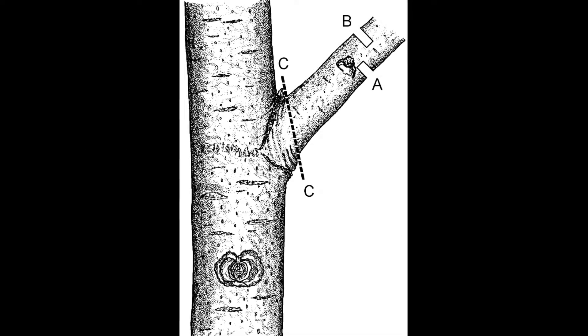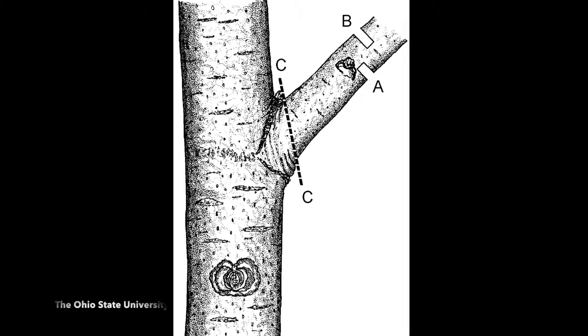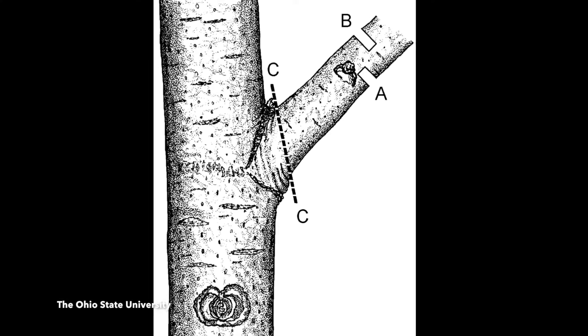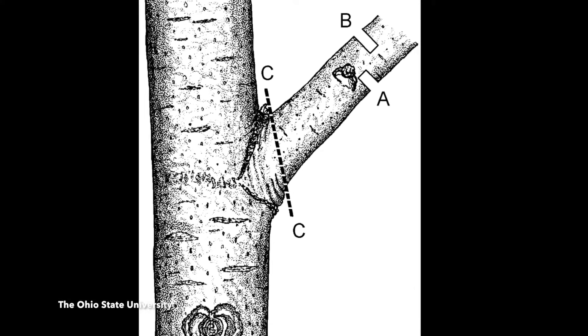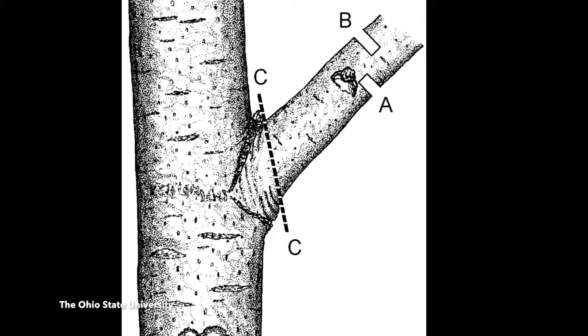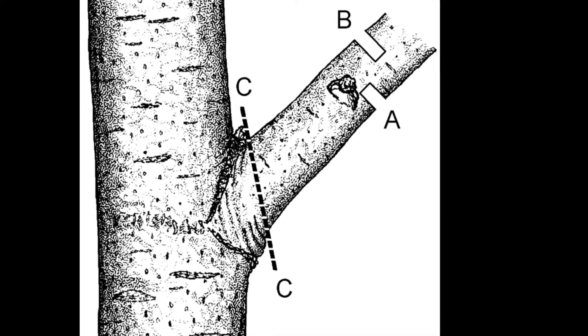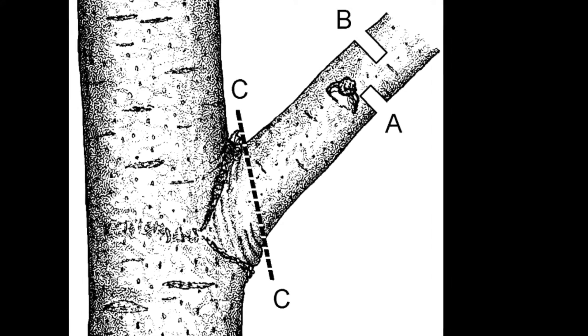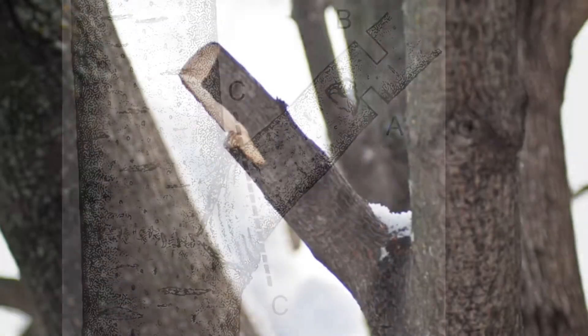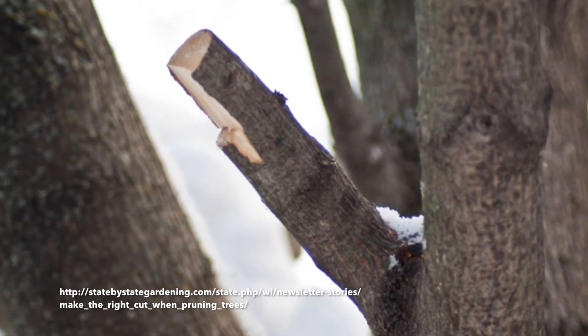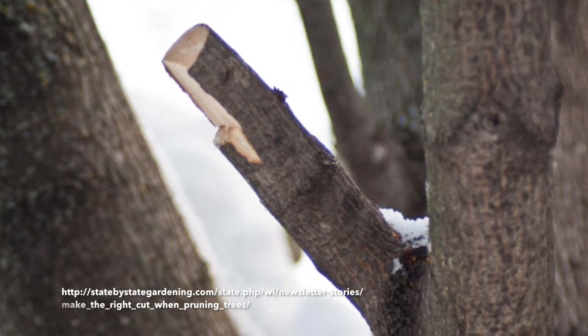The recommended pruning technique is called the three-point cut. The first cut is made about one foot from the tree trunk, cutting from the underside of the branch about one third of the branch's diameter upward through the branch — this cut is called the undercut. The second cut is made on the top of the branch away from the undercut, slicing all the way through the branch — this is named the top cut. Now what is left is a branch stub. If the branch stub is left, the tree cannot seal off the wound and will cause decay.